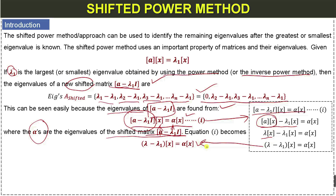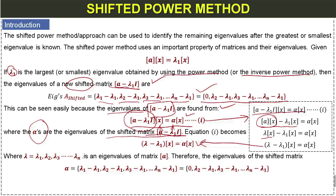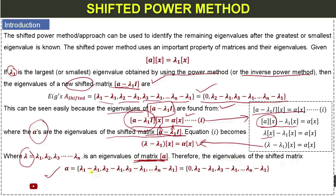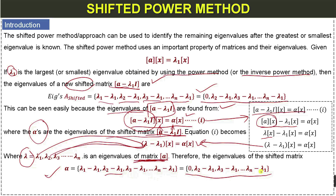After solving, we have the equation where lambda_1, lambda_2, up to lambda_n are eigenvalues of the original matrix A. Therefore, the eigenvalues of the shifted matrix, the alphas, will be: lambda_1 minus lambda_1, lambda_2 minus lambda_1, lambda_3 minus lambda_1, and so on up to lambda_n minus lambda_1. These are the eigenvalues of the shifted matrix.